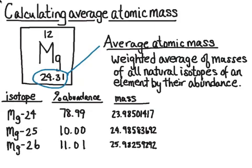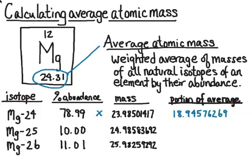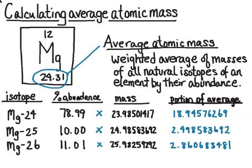Let's take a look at the mass and abundance. I'm going to get the portion of the average contributed by each isotope by multiplying the fractional abundance, 0.7899 times the mass. I get 18.94576269 for the portion from magnesium-24. I'll do the same for 25 and 26, then add those together.